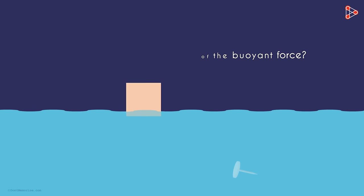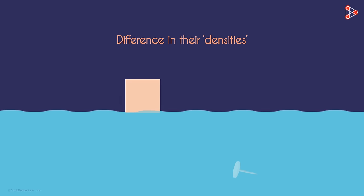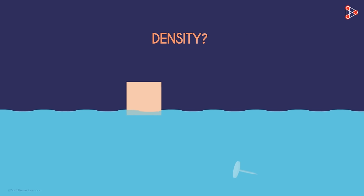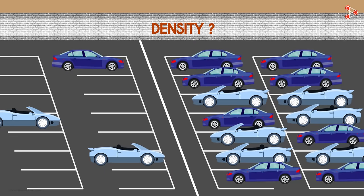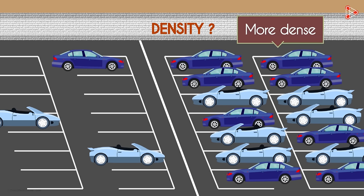This happens because of the difference in their densities. But what's density? Look at these two parking lots of the same size. One has three cars and the other has many cars. Which one is more dense? This one, correct?